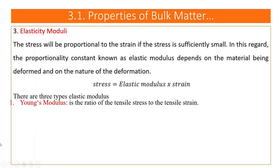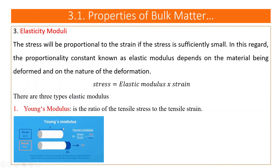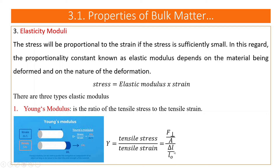From this we get three different types of elastic modulus. The first is Young's modulus, which is the ratio of tensile stress to tensile strain. Young's modulus, represented by Y, equals tensile stress divided by tensile strain — that is, the perpendicular force divided by area, over the change in length divided by the original length.